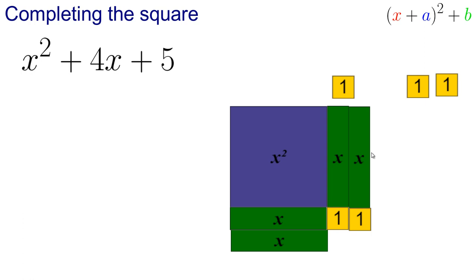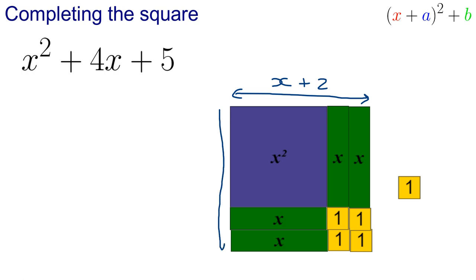Now this time I've actually got a complete square and this length again along here is going to be my x plus 2, exactly the same as it was last time. And then down here, again, I've got that length x plus 2.